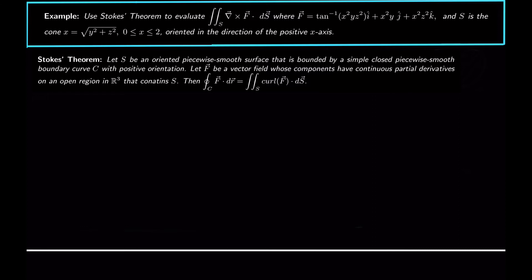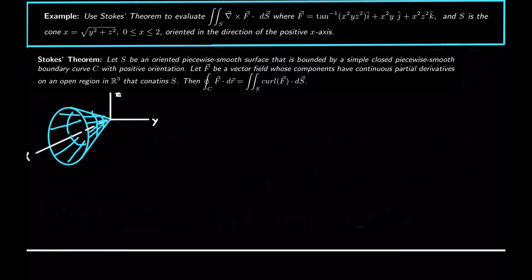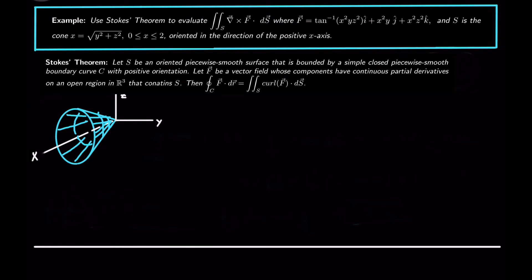In this example we have Stokes' theorem applied to this field F, which looks pretty nasty honestly — not a friendly looking field, and I definitely don't want to take the curl of it. We apply that surface integral to the surface S, which is the cone x equals square root of y squared plus z squared, but x is bounded between 0 and 2. So that cone is our surface, and we want to find what's the flux of the curl of this field through the cone.